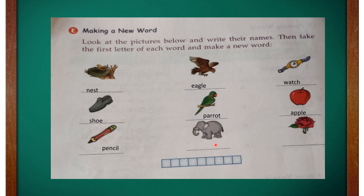The next picture given here is a pencil — P-E-N-C-I-L, pencil. The next picture given here is an elephant — the spelling of elephant is E-L-E-P-H-A-N-T, elephant. And the last picture given here is a rose — the spelling of rose is R-O-S-E, rose.